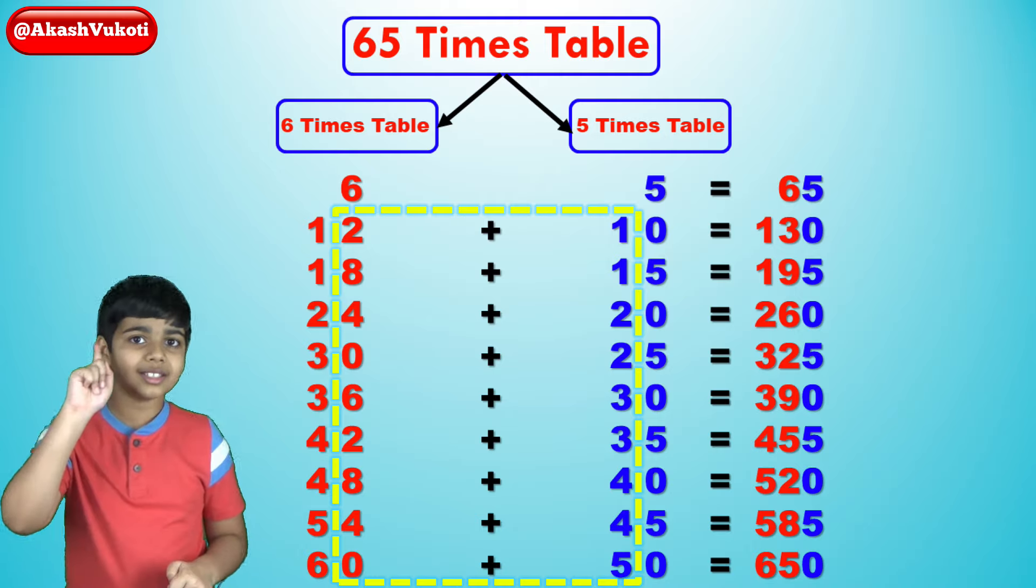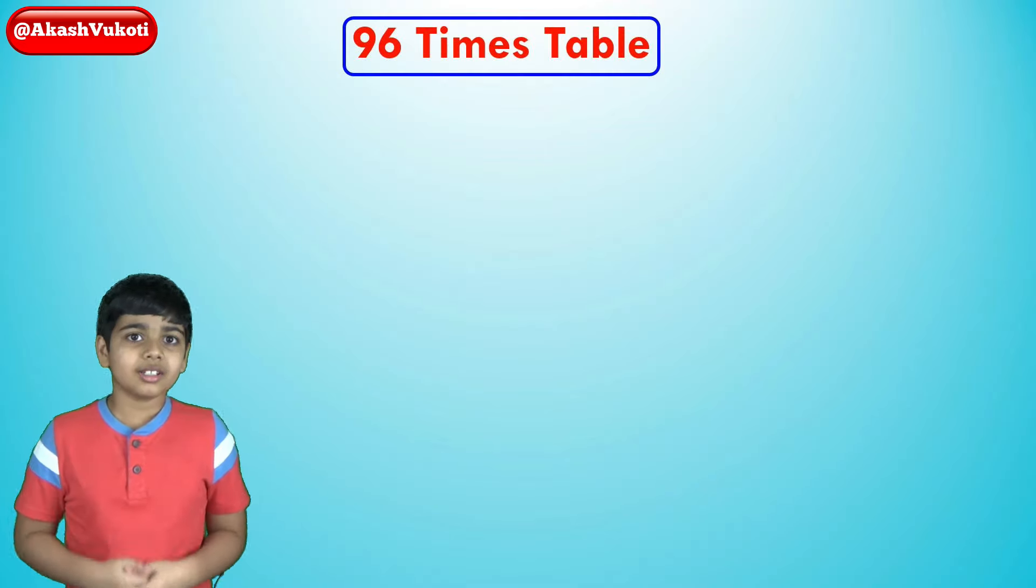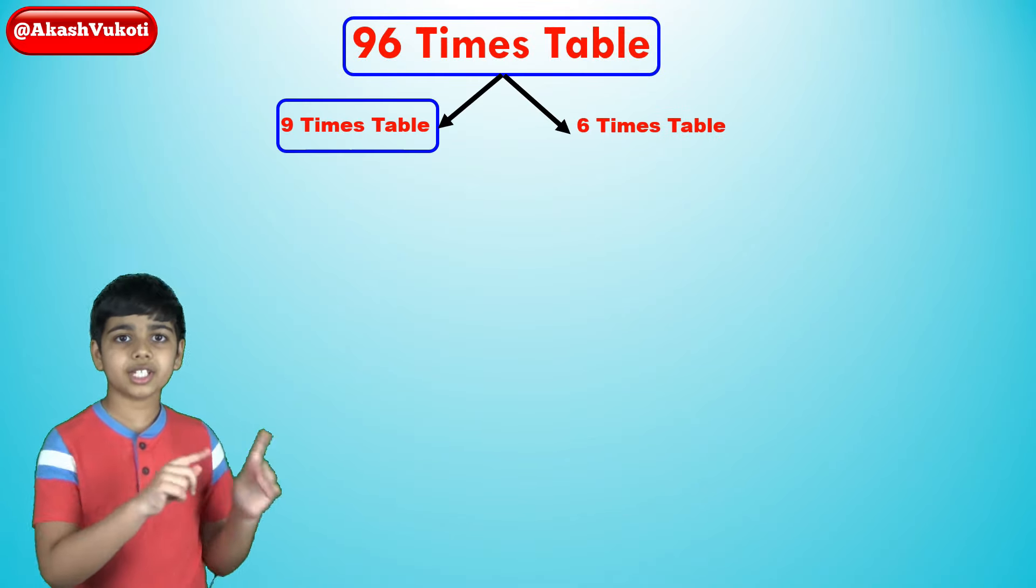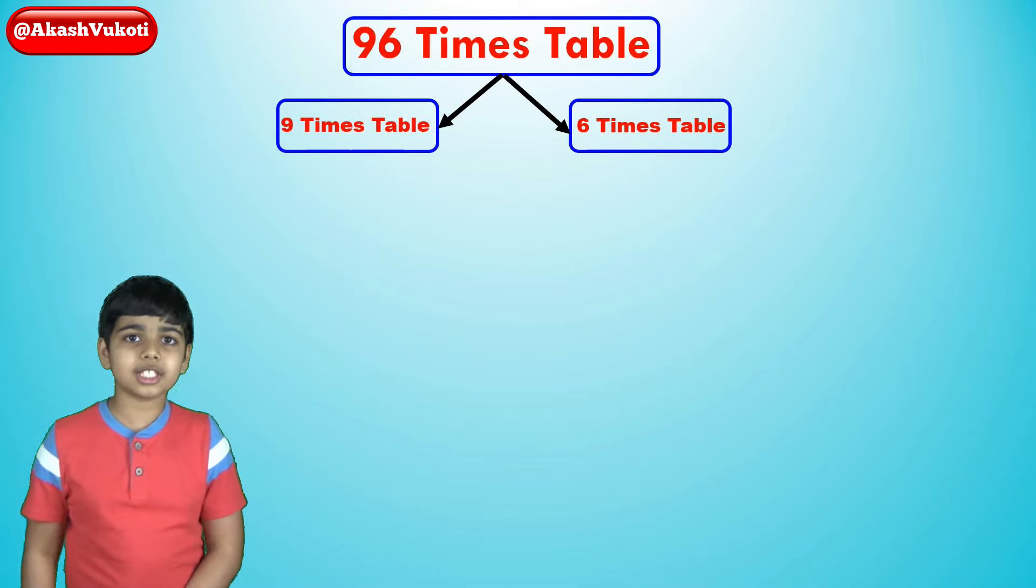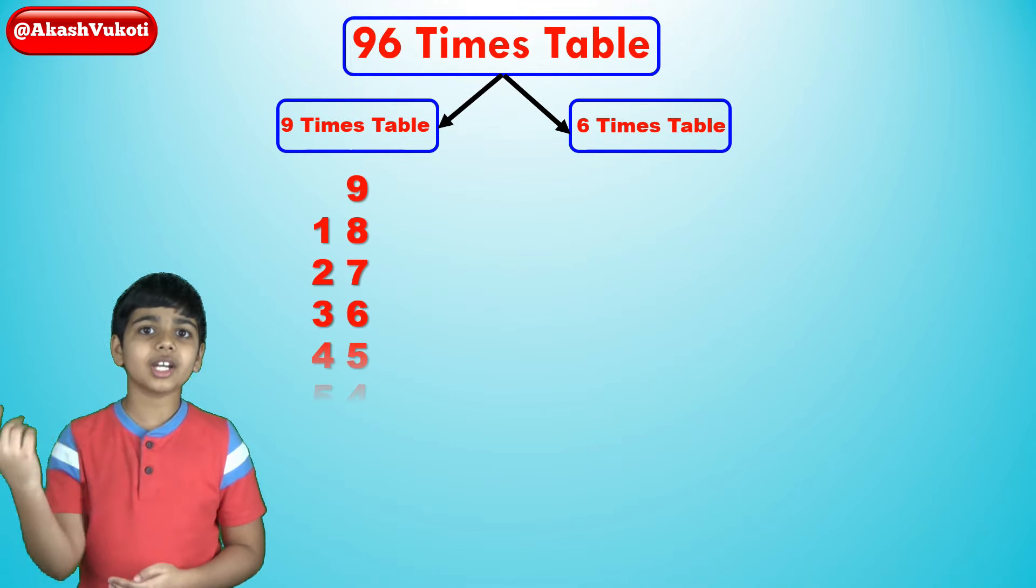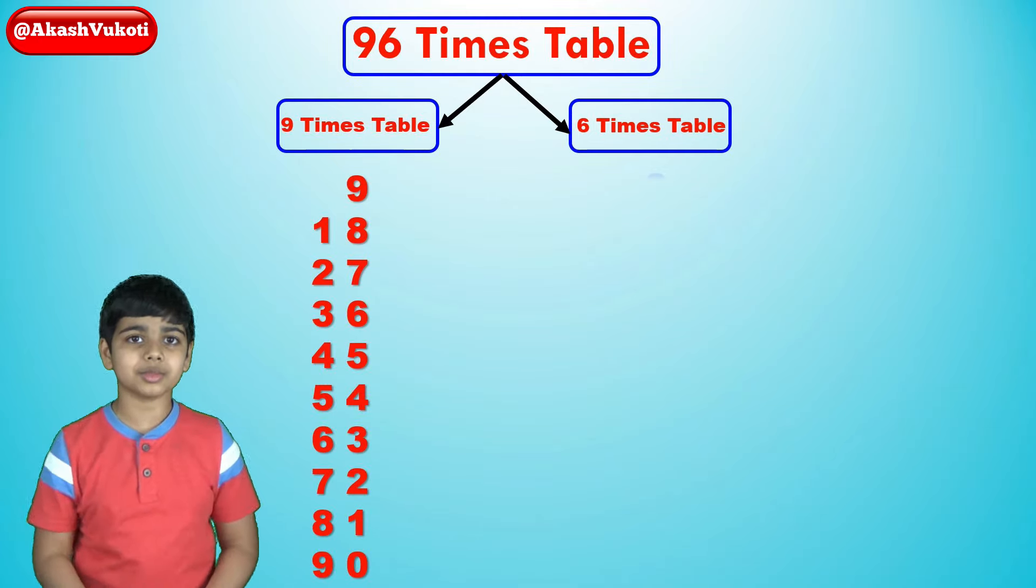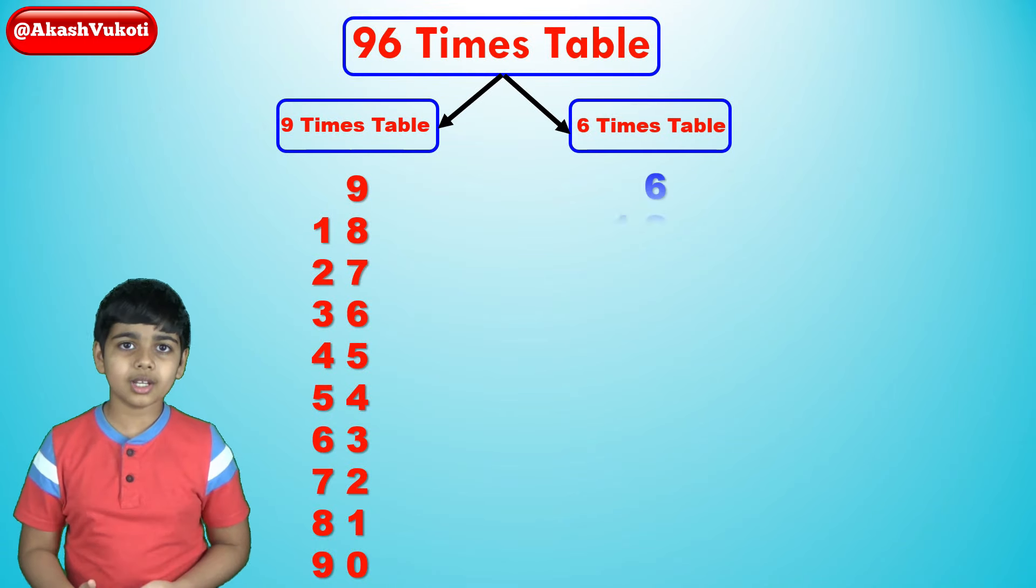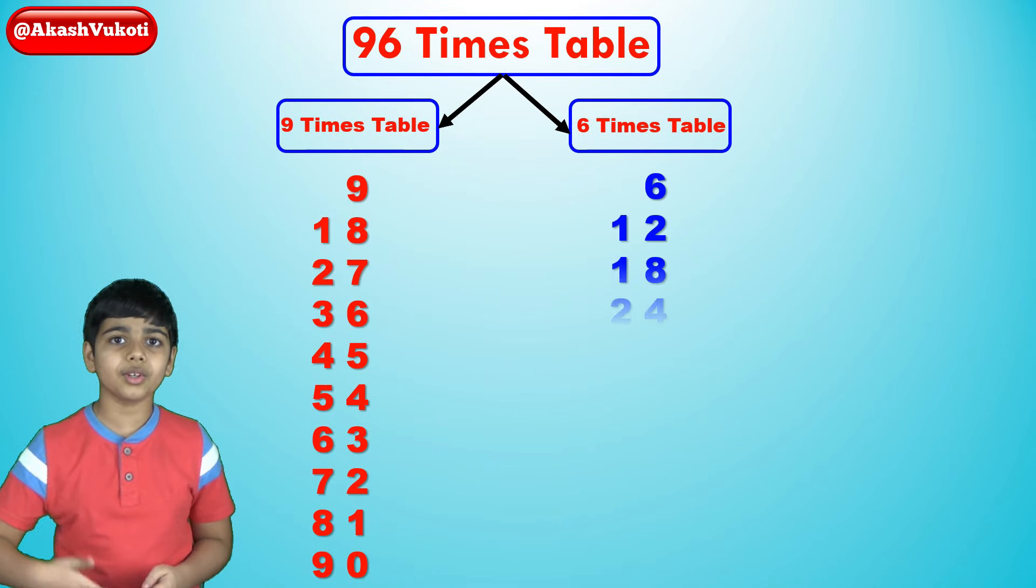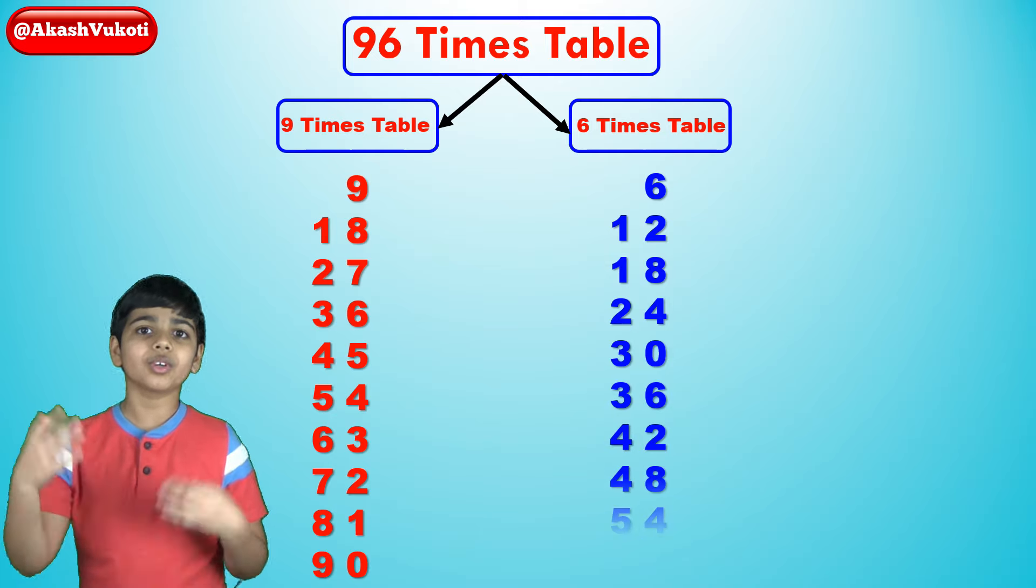Now, let's try one last one. Say 96. Now, let's take a look at our tables. We've got the 9 times table, which is 9, 18, 27, 36, 45, 54, 63, 72, 81, and 90. And then, we have the 6 times table. 6, 12, 18, 24, 30, 36, 42, 48, 54, and 60.